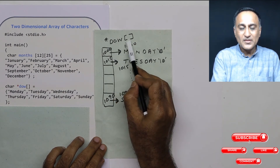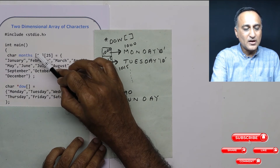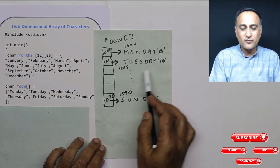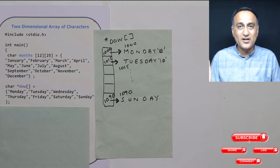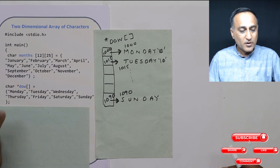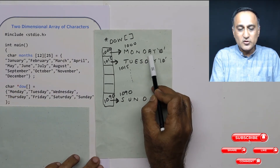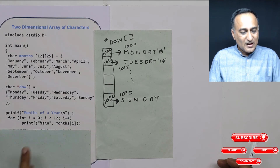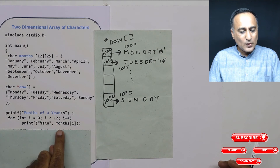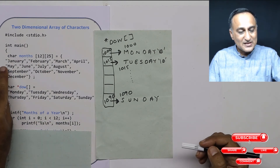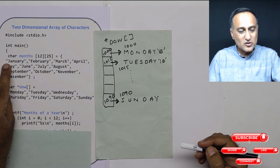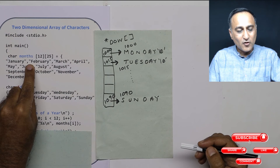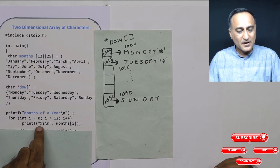Using an array of pointers to character data is definitely preferable over a two-dimensional character array, because as you saw in the previous slide, there was wastage of space since we had to define the maximum column size as 25, assuming some month could be 25 characters long. When declared as an array of pointers, just the space required to store the characters is allocated, followed by a null. To print the months of the year, all I have to do is use a for loop with i less than 12 — months[i] holds the starting address of each month, which is passed to printf to print it.